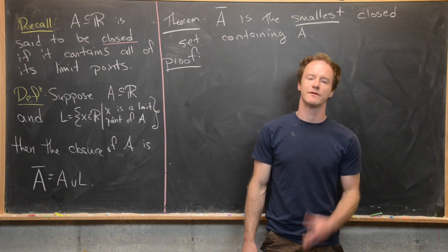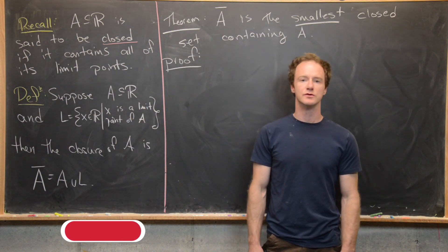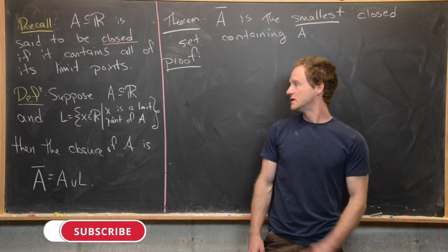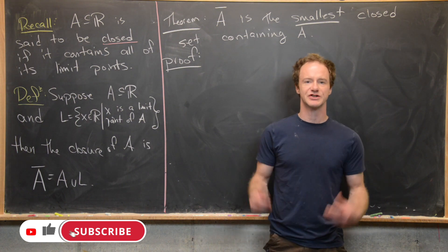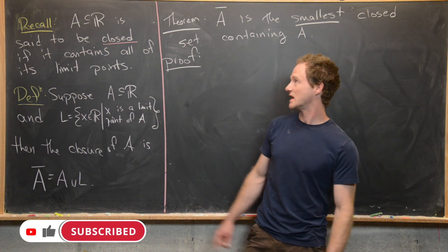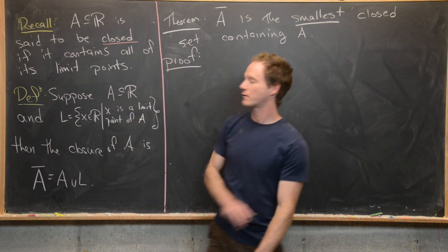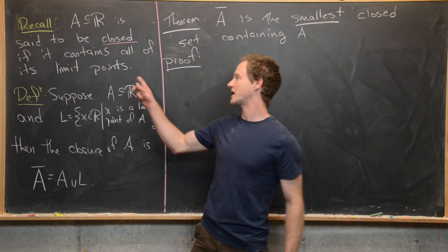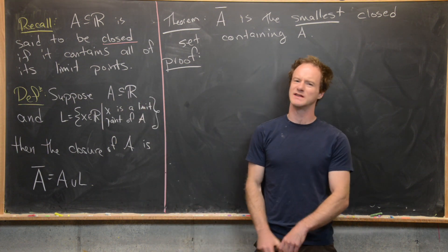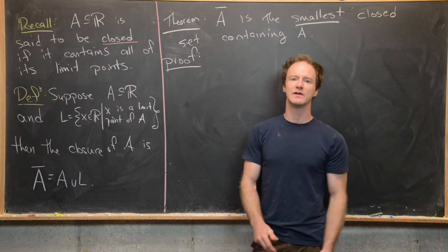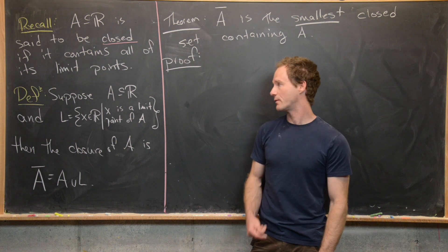Previously we looked at the notion of a limit point of a set and a closed set. Let's recall the definition of a closed set: a set A of real numbers is said to be closed if it contains all of its limit points. I'll leave it to you to look back at the definition of a limit point.